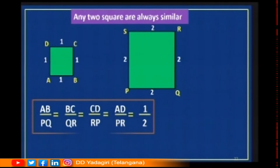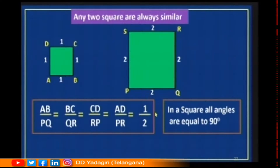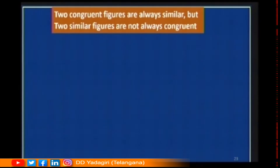Children, from this you can understand that corresponding sides are in proportion, and in a square all angles are equal to 90 degrees. These two conditions are satisfied: corresponding sides are in proportion and all angles are equal to 90 degrees, so corresponding angles are equal. From this, two squares are always similar. Two congruent figures are always similar, but two similar figures are not always congruent.